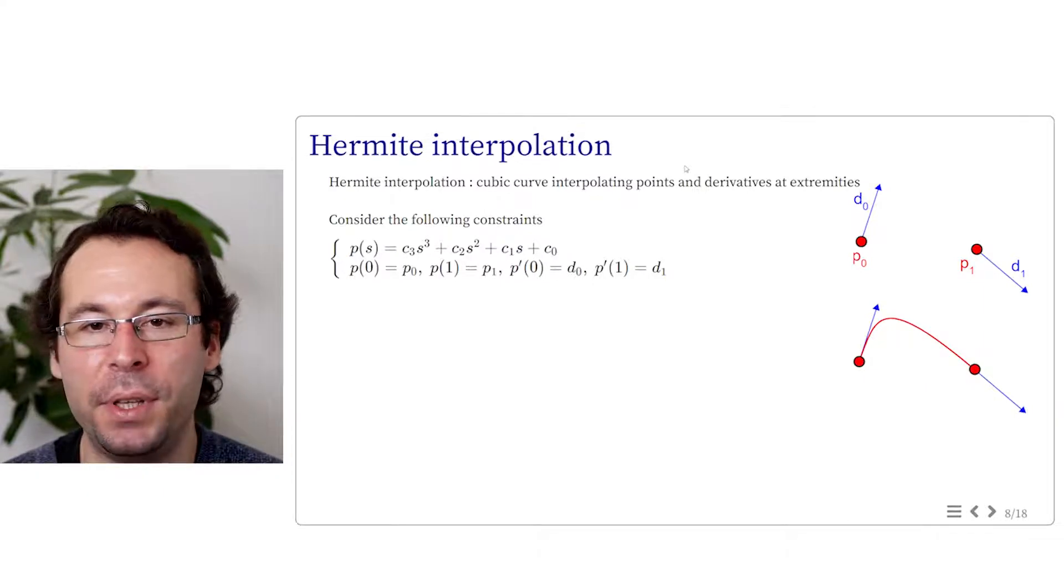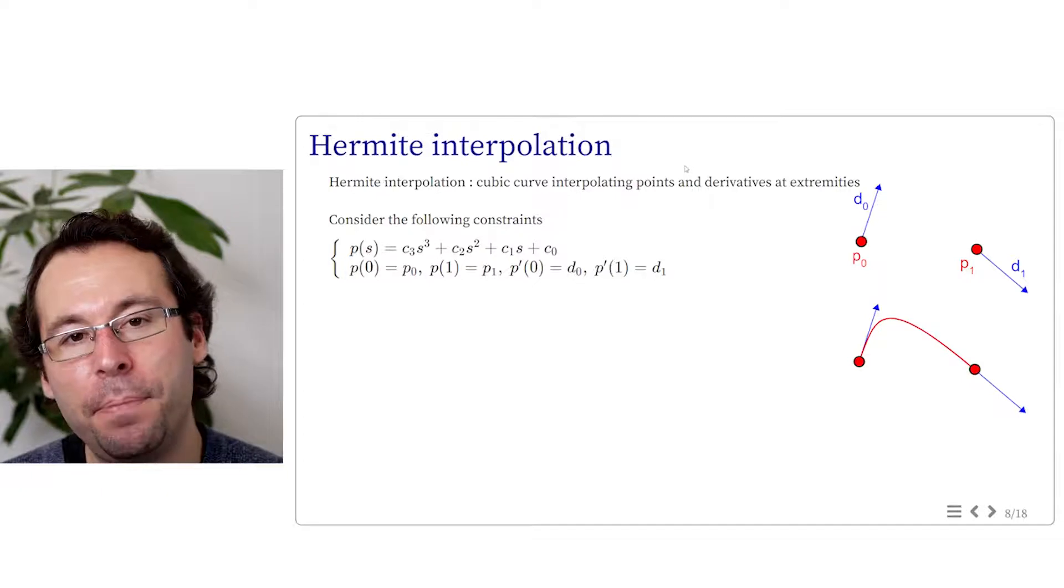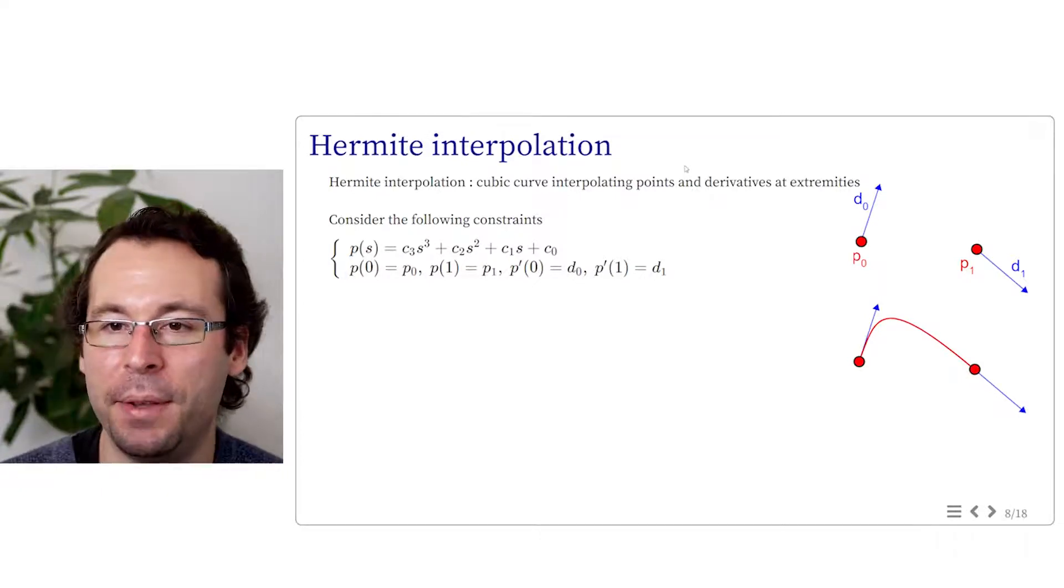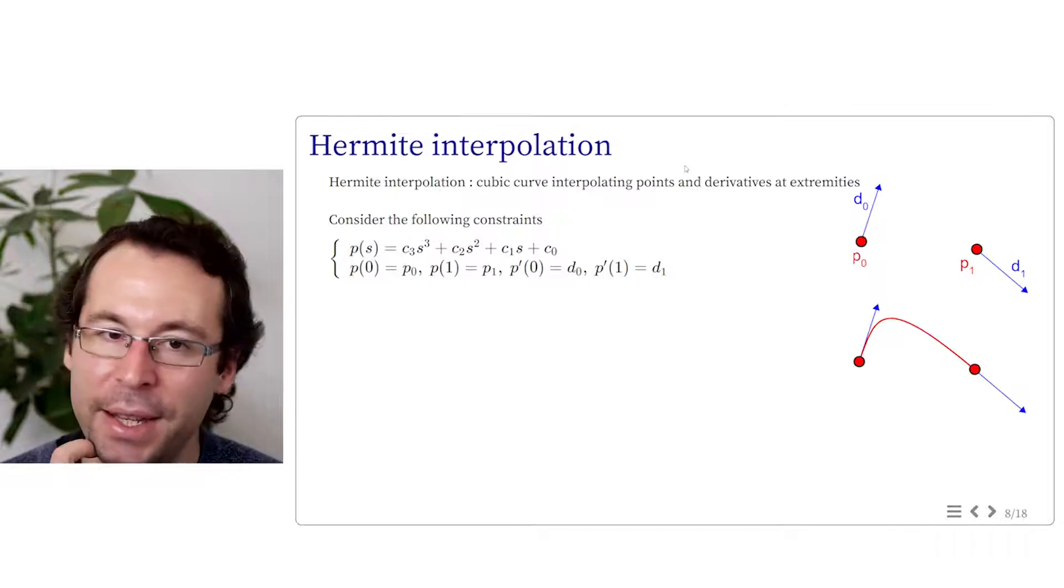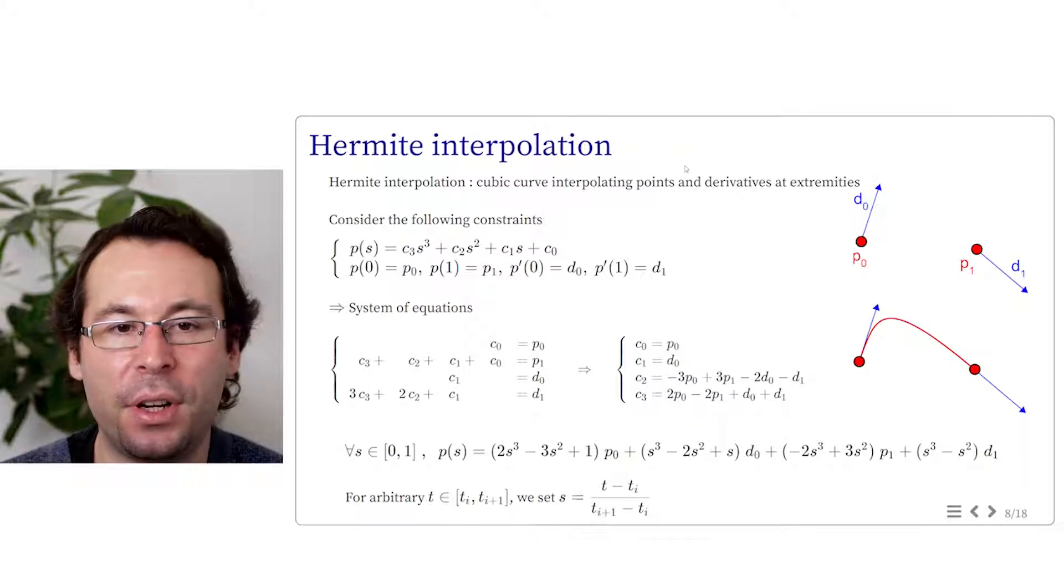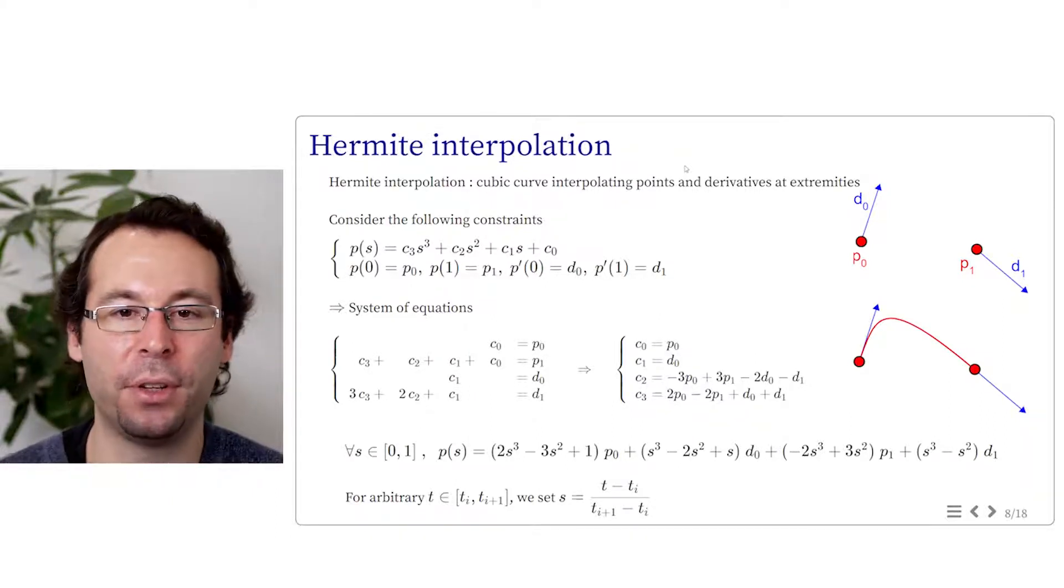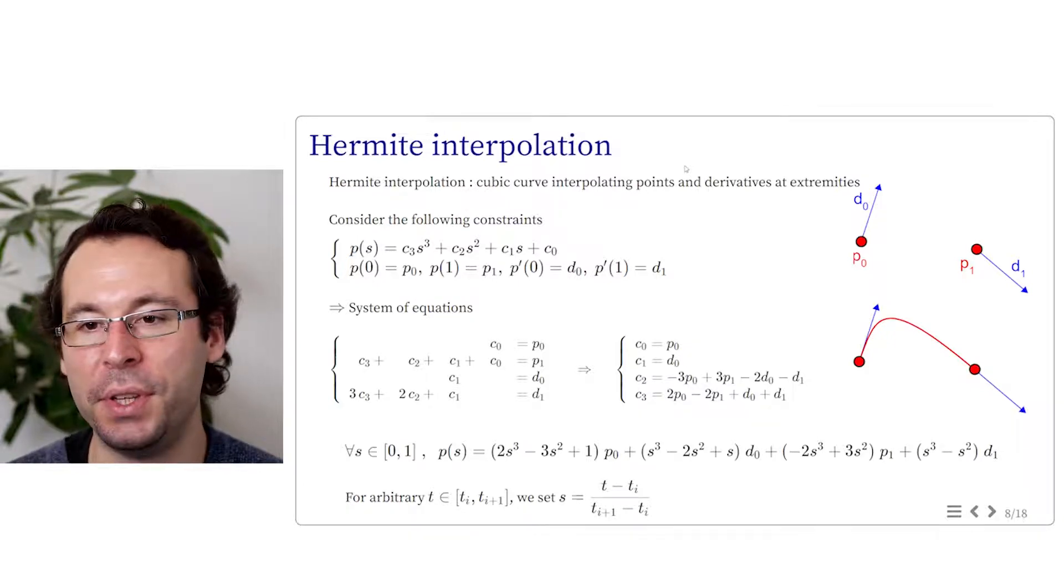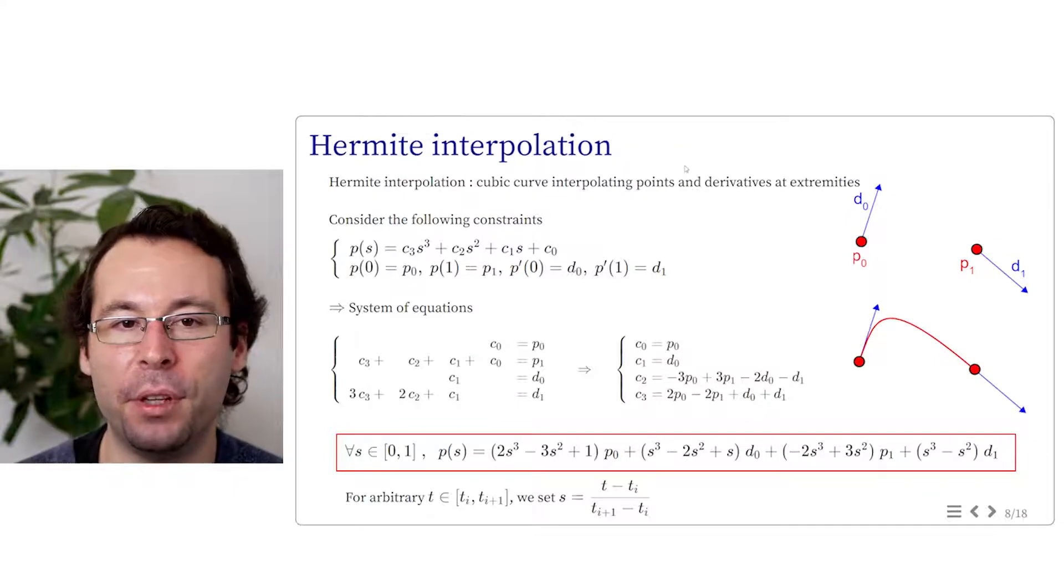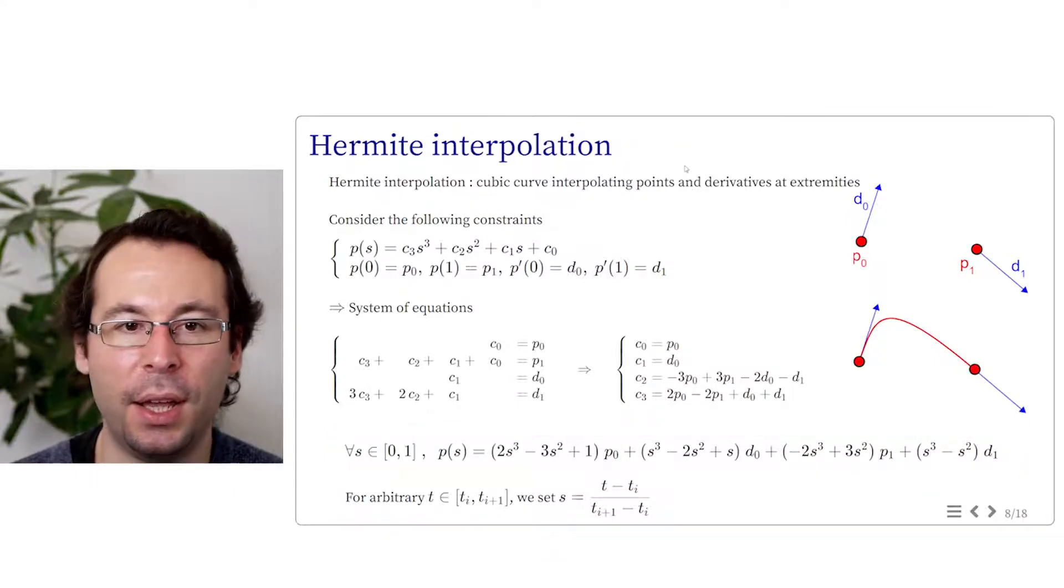We can express the relation. We look for P of s equal constant 3 s cube plus constant 2 s squared plus constant 1 s plus constant 0. I use the parameter s to vary between 0 and 1 and we will rescale it later to an arbitrary time value. We have the four constraints: P at time 0 equals P0, P at time 1 equals P1, P prime at time 0 equals D0, and P prime at time 1 equals D1.